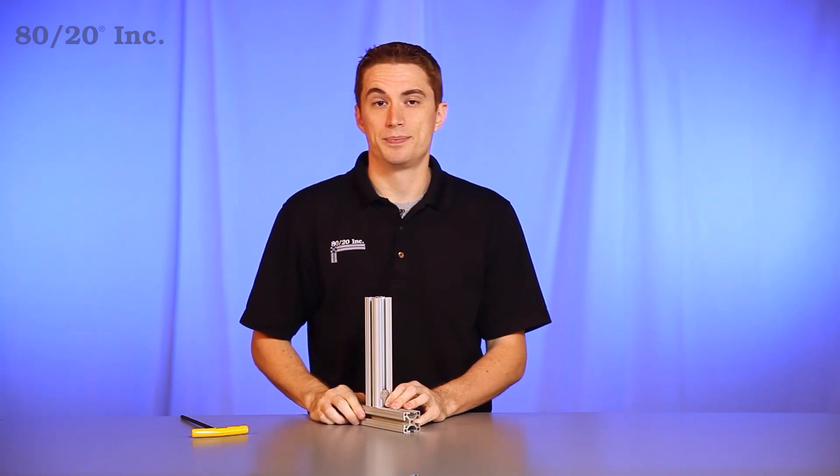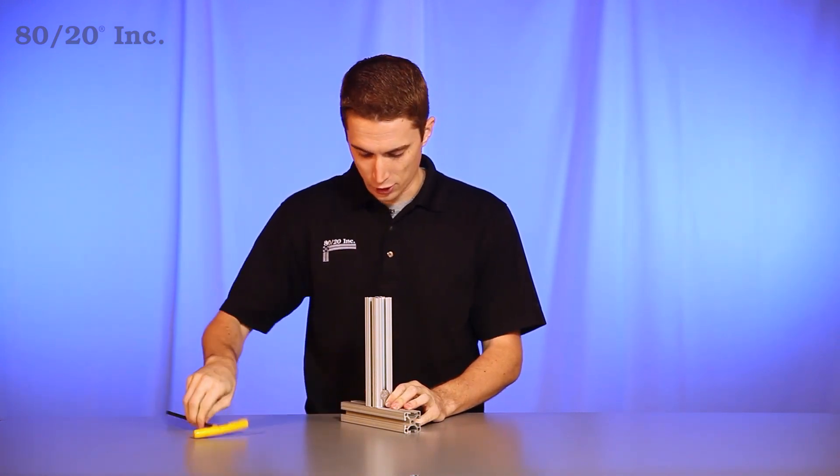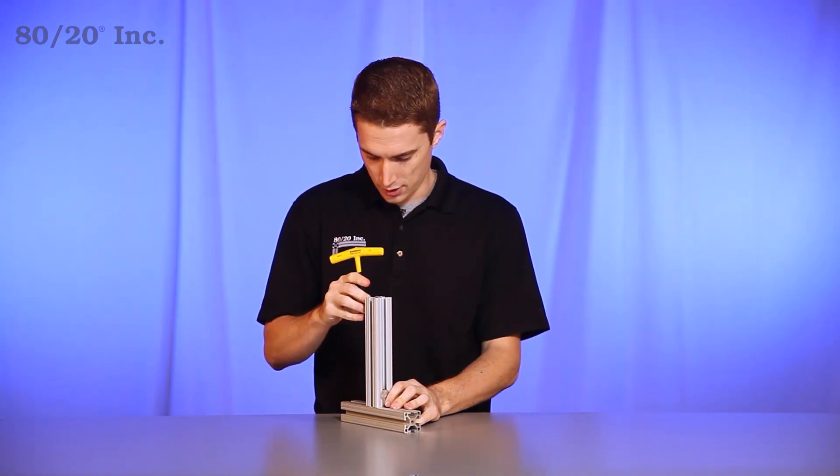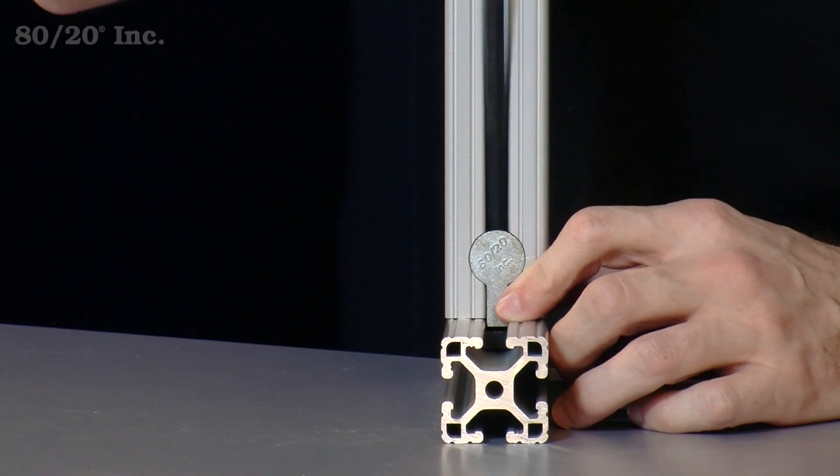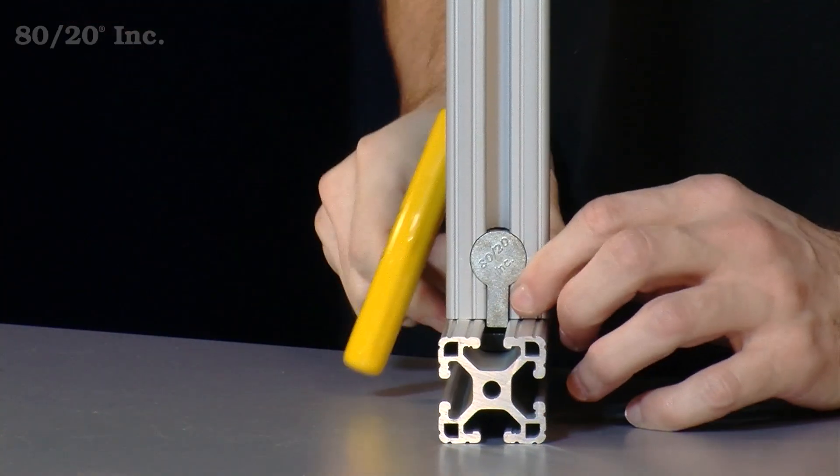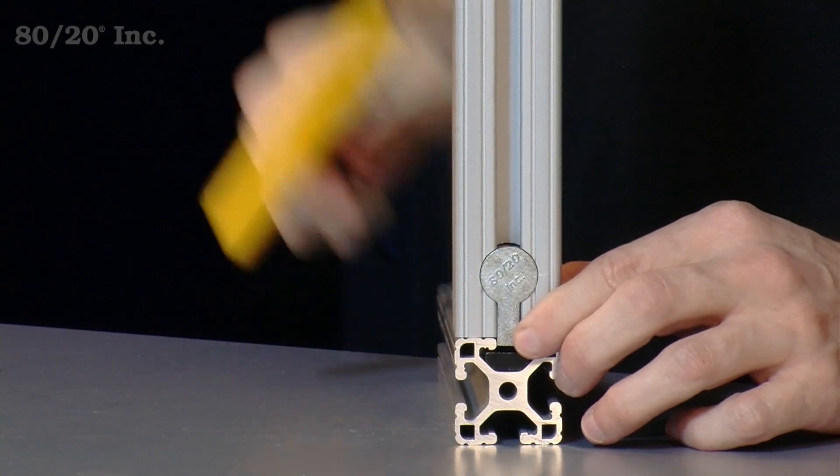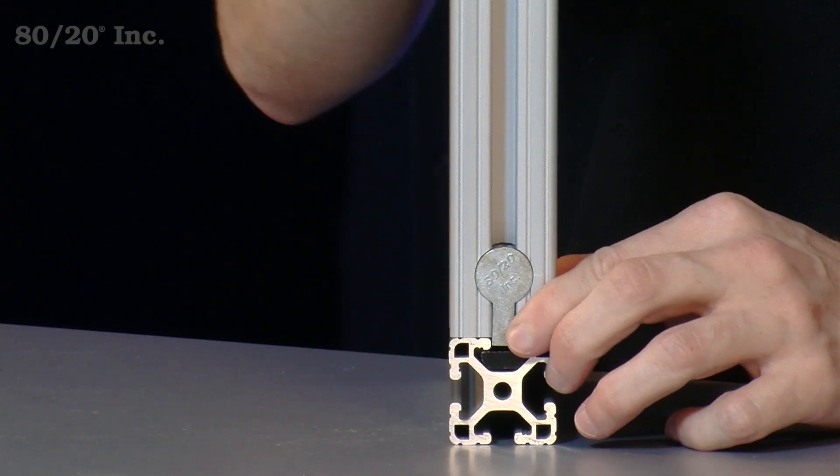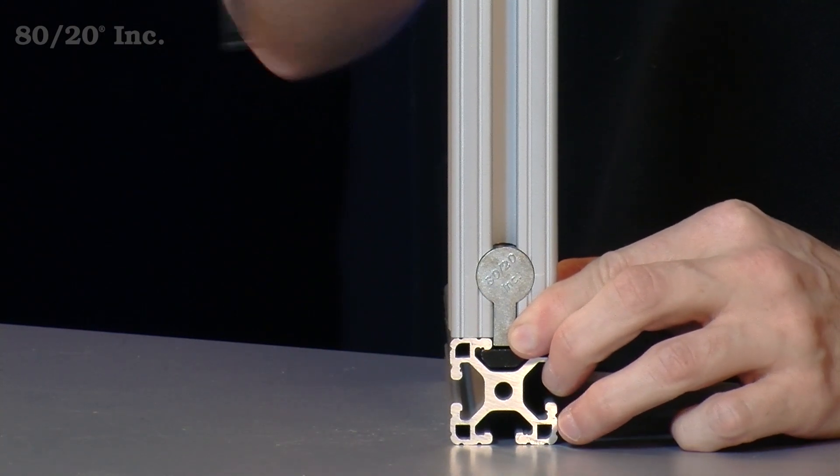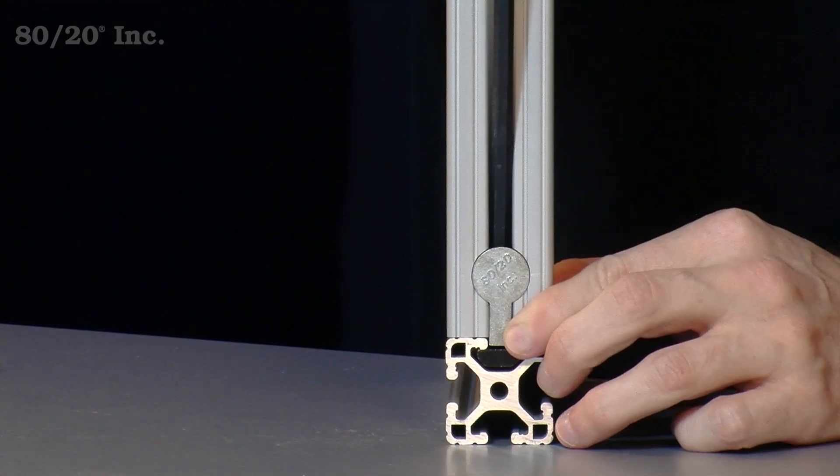Now the great thing about the double anchor fastener is its adjustability. If you need a new location on the bar, simply loosen up the double anchor fastener and slide it anywhere along the bar. Once you've found your new location, tighten down, and you're good to go.